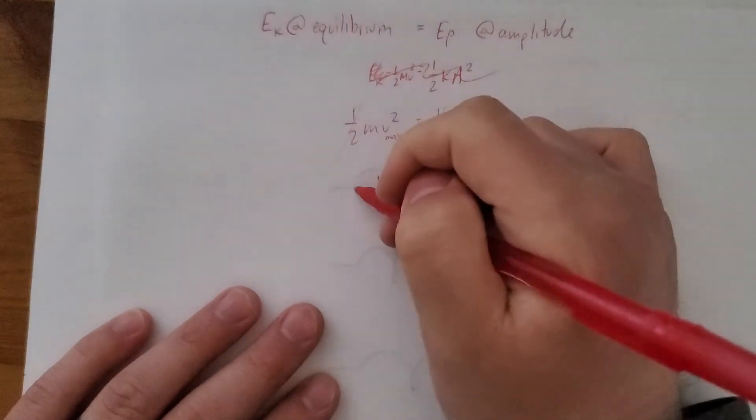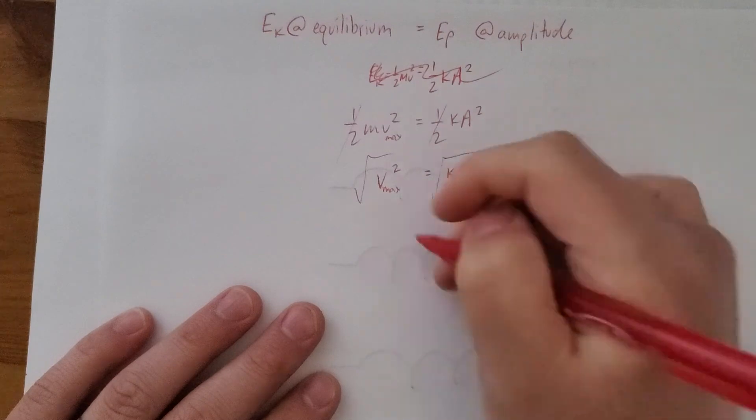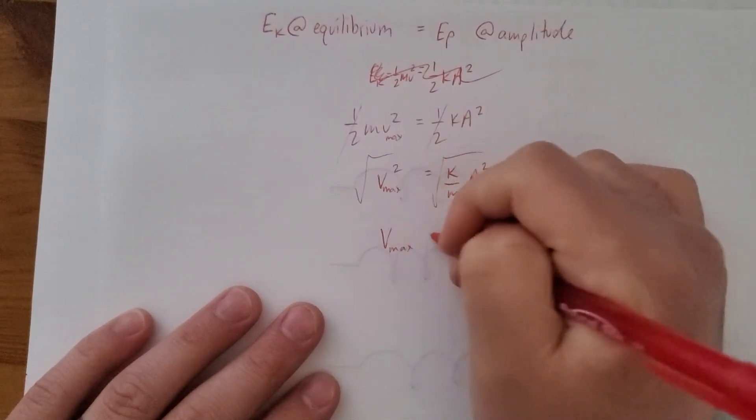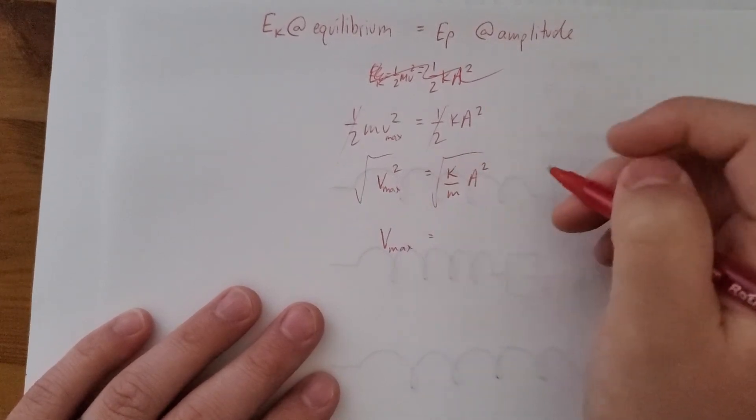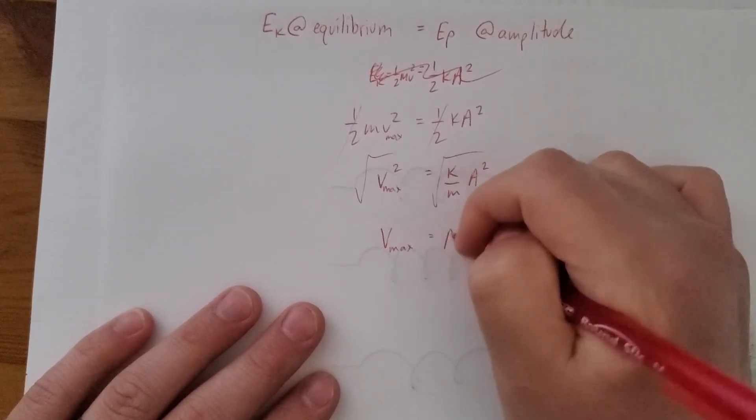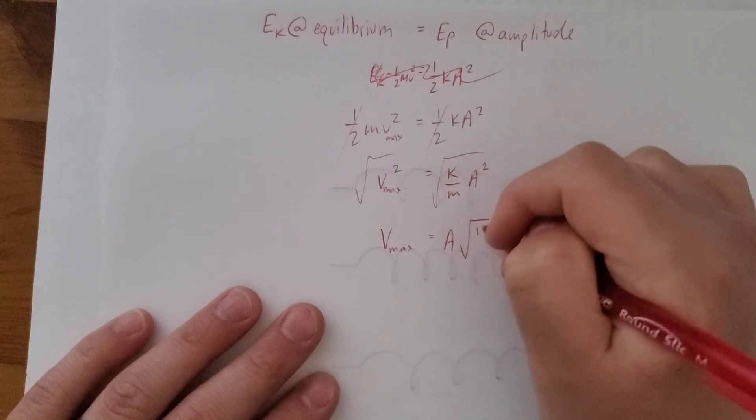If I take the square root of both sides, it's going to look like this. The A squared under a square root just becomes A. It becomes A times the square root of k over m.